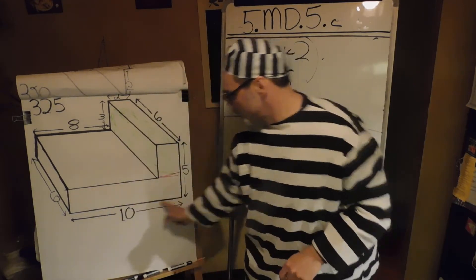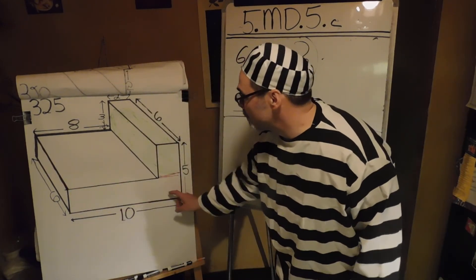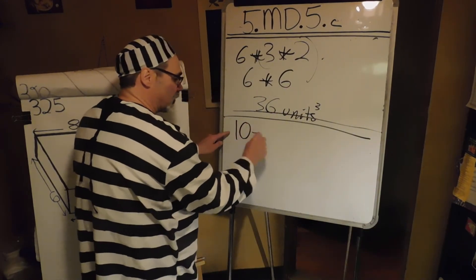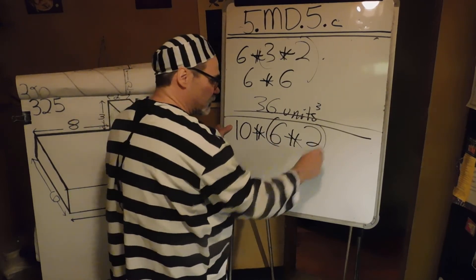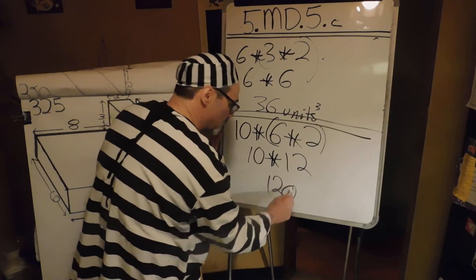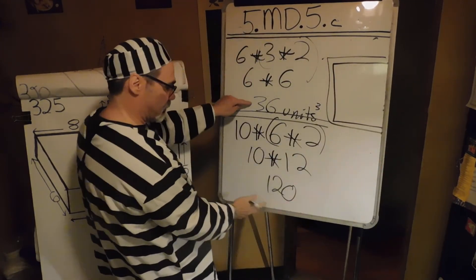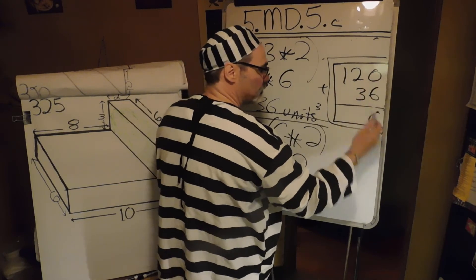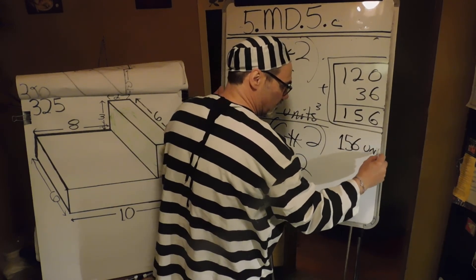Now we've got to do the one on the bottom. Ten is the length — the longest dimension is usually called the length. Six deep. And here's where we have to be careful, because this is only two high. So it's ten times two times six. Six times two is twelve, and ten times twelve is one hundred twenty.